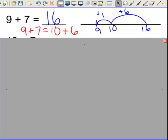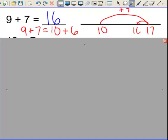Someone else might say that I know 10 plus 7 is 17, so 9 plus 7 is 1 less. And I might model that one like this.